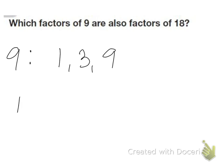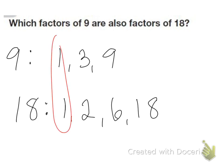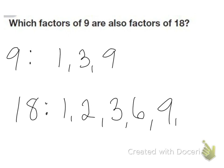The factors of 18 are 1, 2, 3, 6, 9, and 18. So we say that 1, 3, and 9—I've missed those ones initially.